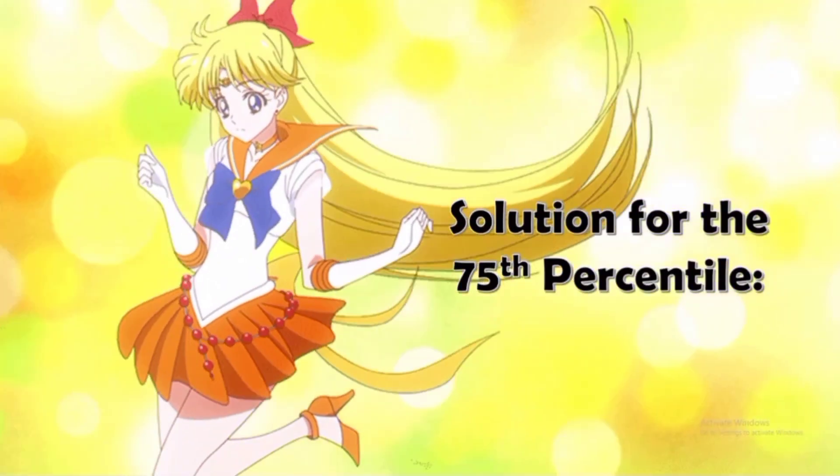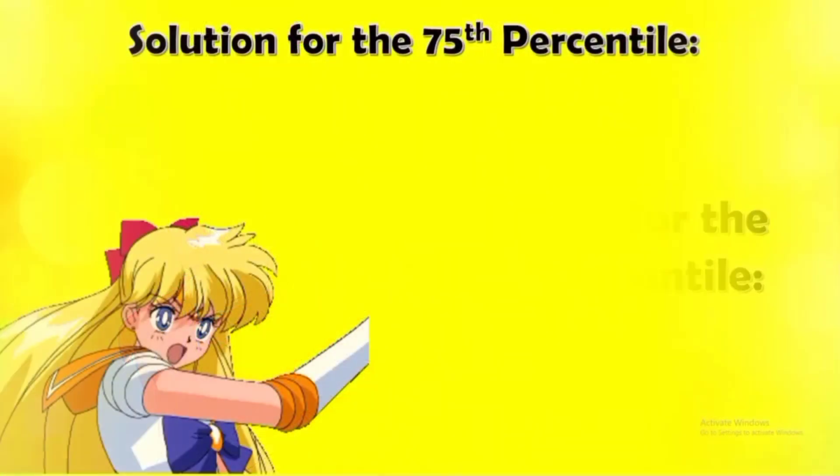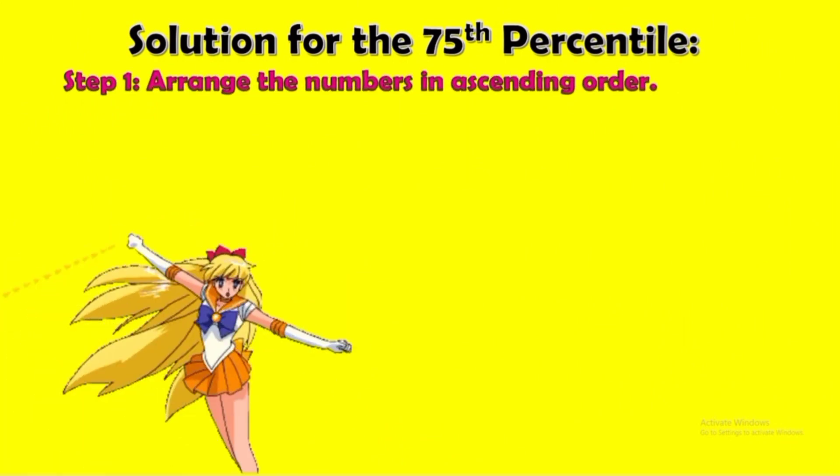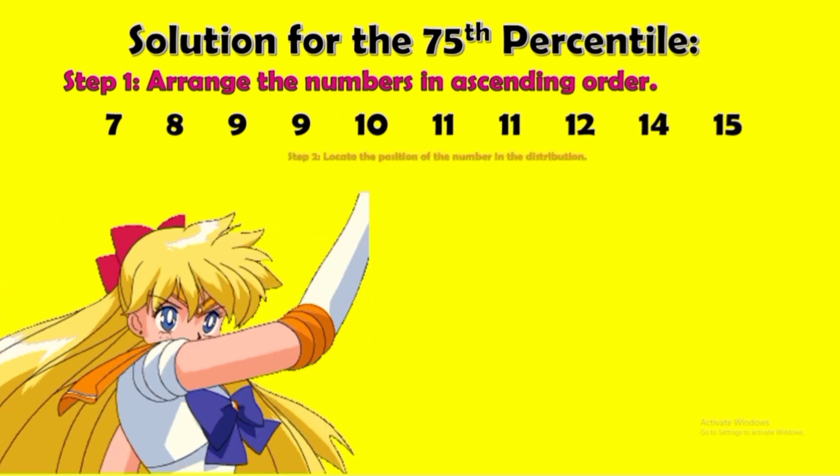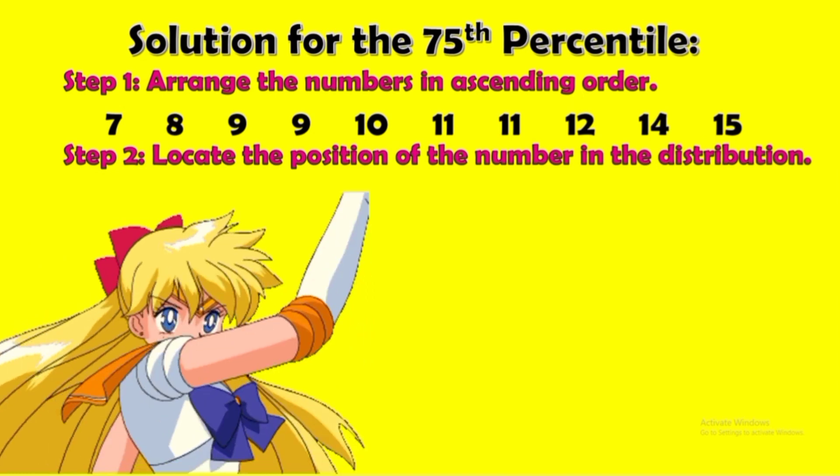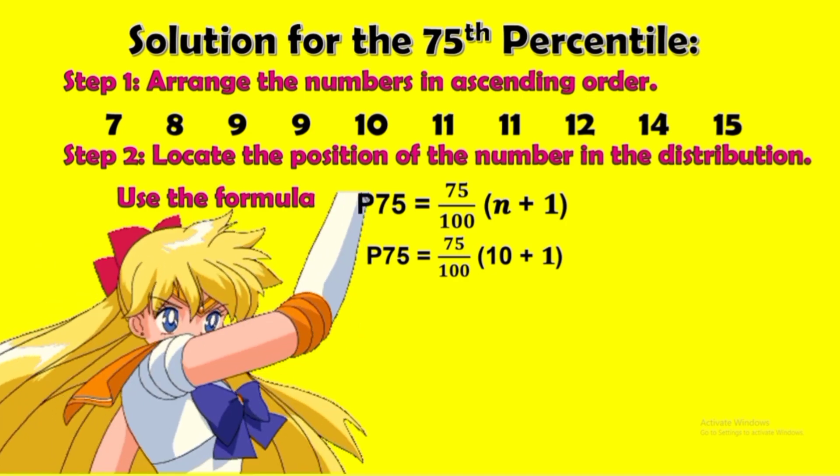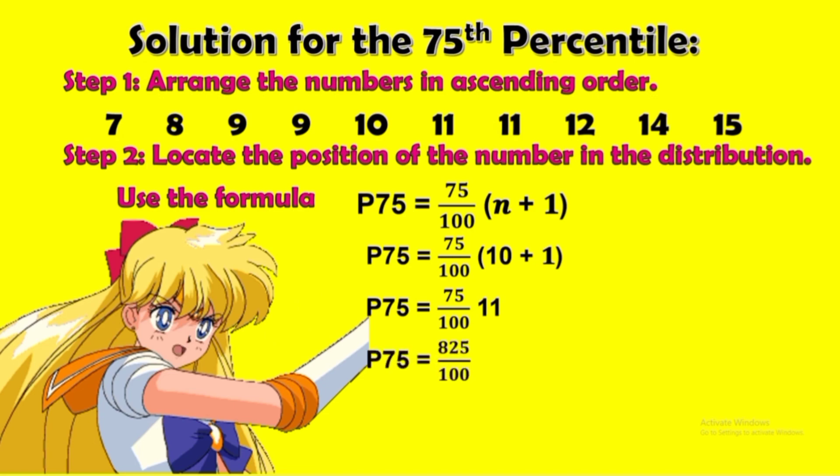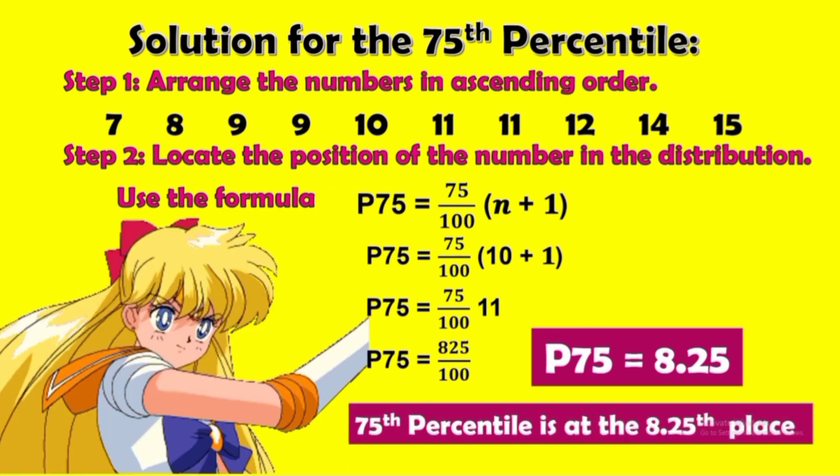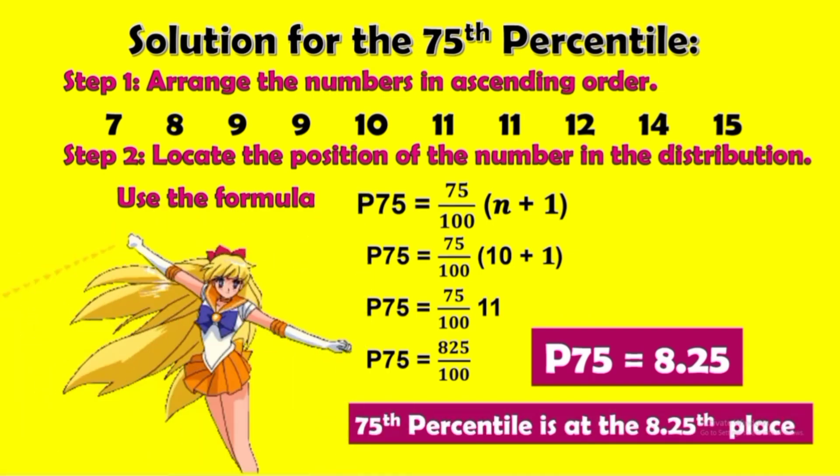Solution for the 75th percentile. Step 1: arrange the number in ascending order. Again, we will use the same position. Step 2: locate the position of the number in the distribution. Now use this given formula. First, substitute the value of n. Then let's add that from 1. That is 11. Then let's multiply. 825 divided by 100 is 8.25. Therefore, the 75th percentile is at the 8.25th place.